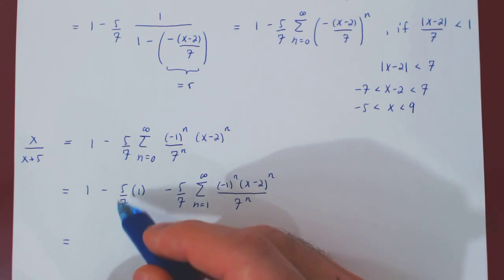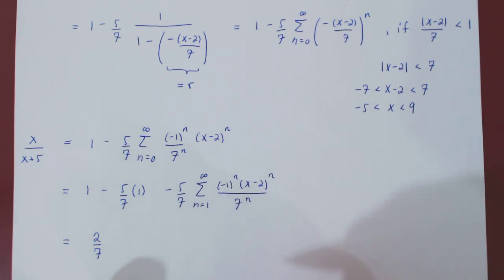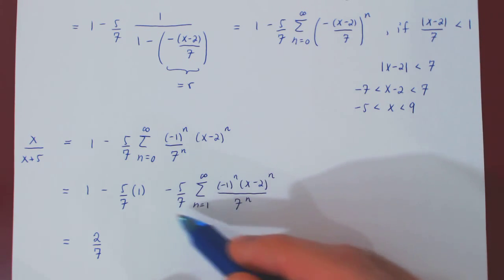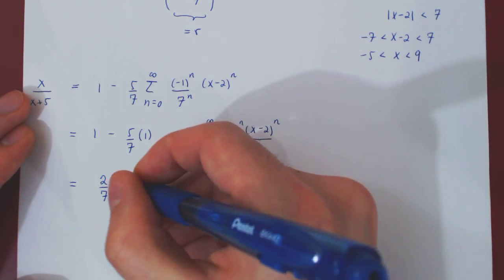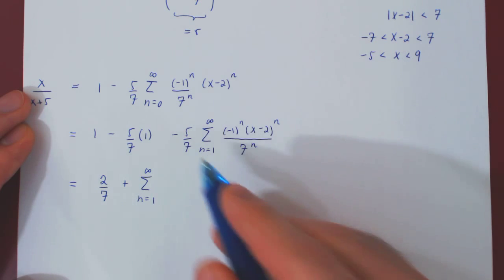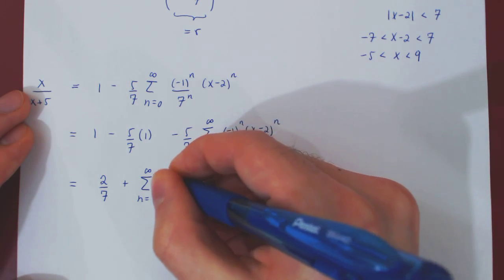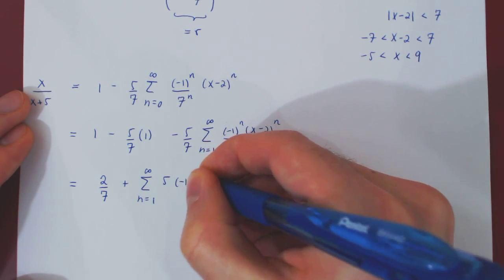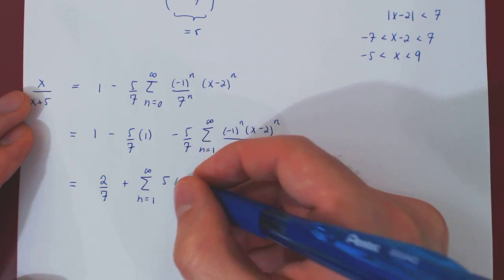Let's simplify. We pull out the first term of the series when n is 0: negative 1 to the 0 is 1, 7 to the 0 is 1, x minus 2 to the 0 is 1 — so we get 1. Then 1 is 7 over 7, minus 5 over 7 is 2 over 7, just as in the previous video. Dumping the multiple of negative 5 over 7 inside the remaining series, a negative 1 times negative 1 to the n is negative 1 to the n plus 1, and a 7 times 7 to the n is 7 to the n plus 1, times x minus 2 to the n.